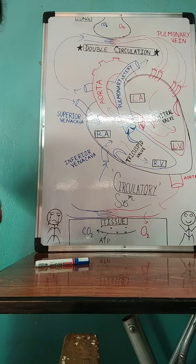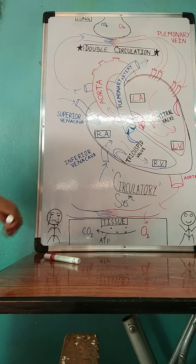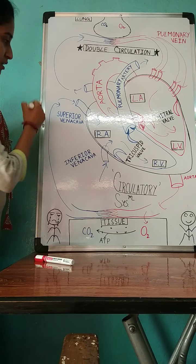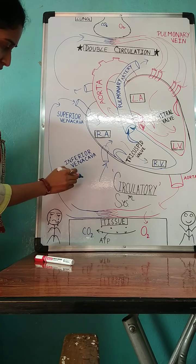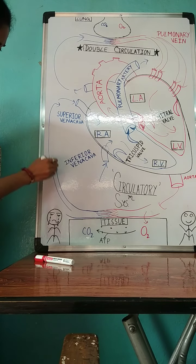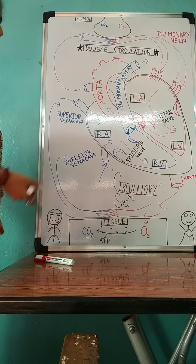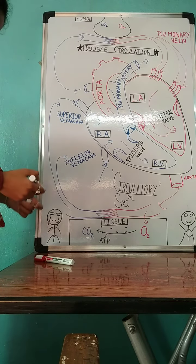So this blood is again deoxygenated and again goes via superior vena cava to the right atrium and via inferior vena cava also to the right atrium.